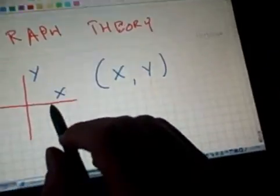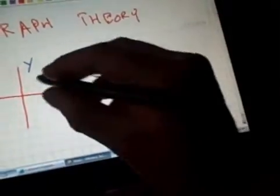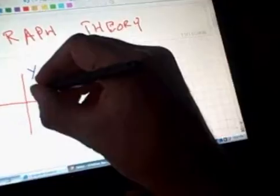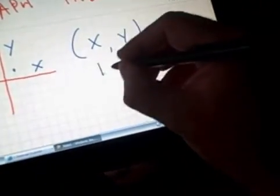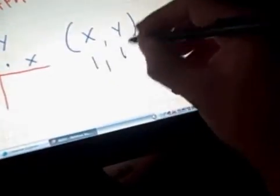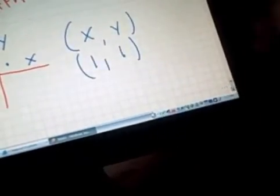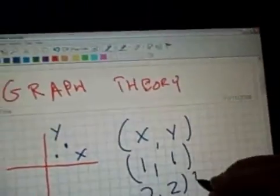X always goes first, so x is the horizontal axis. We plot points through x and y, so this point right here would be x is 1 and y is 1. Plot the next point there: x is 2, y is 2.